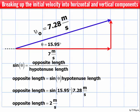So opposite length equals sine 15.95 degrees times 7.28 meters per second, and that gives me 2 meters per second. So the opposite side is 2 meters per second.